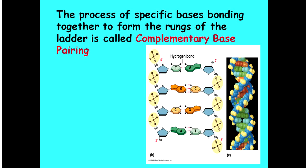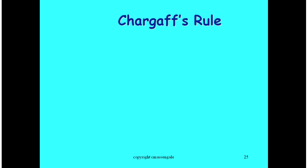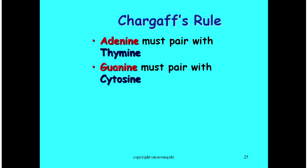Certain bases always pair together across the DNA ladder. Adenine always pairs with thymine, guanine always pairs with cytosine. And we call that specific base pairing complementary base pairing. Erwin Chargaff was the scientist who figured out which bases bond together. He found out that adenine always pairs with thymine and guanine always pairs with cytosine.